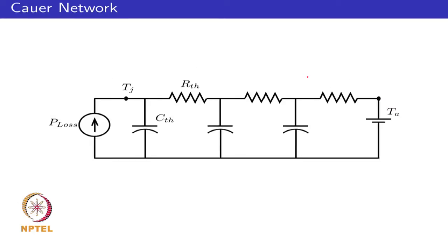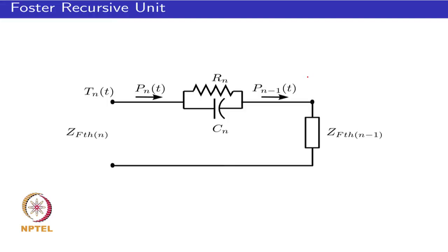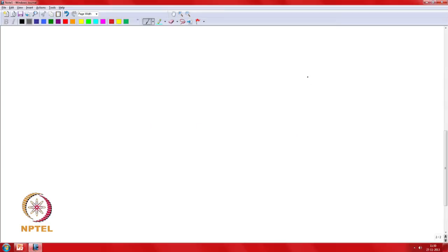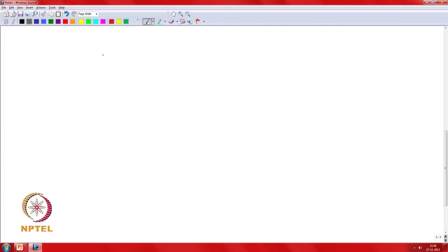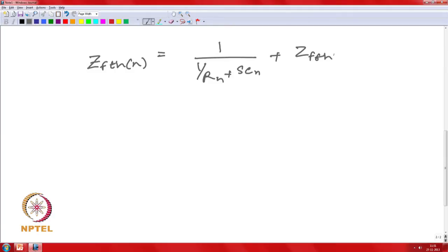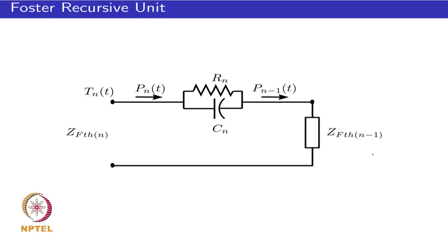To analyze the Foster and Cauer networks, one has to evaluate the impedance for each. We look at a Foster network as a recursive unit. The impedance of the nth recursive unit of the Foster network, Z_FTH of the nth unit, is 1 divided by (Rn plus SCn) plus Z_FTH of the Foster network of the previous stage, adding the nth component to get the Foster impedance at the nth stage.